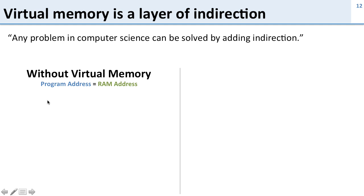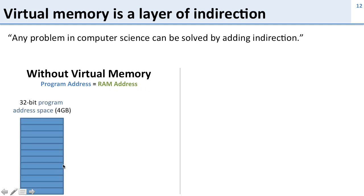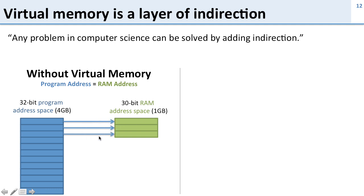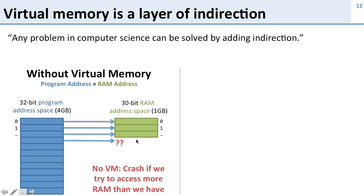Without virtual memory we don't have indirection. The program address that the program uses in MIPS is exactly the same as the RAM address. So if the program tries to load from address 1024, it's going to look for RAM address 1024. Here's our 32-bit address space the program guarantees, and here's our 32-bit address space if we only have one gigabyte of RAM in our computer. Address 0 is going to map over here to 0, 1 to 1, etc., all the way through the first gigabyte. But when we start using addresses that are beyond the first gigabyte, they don't have anywhere to map to. So with this direct mapping, we're going to crash if we try to access more memory.